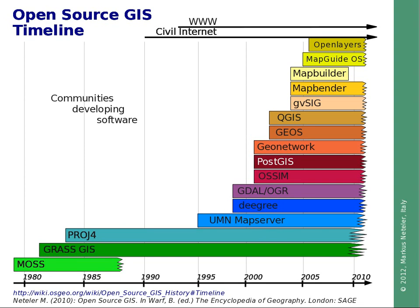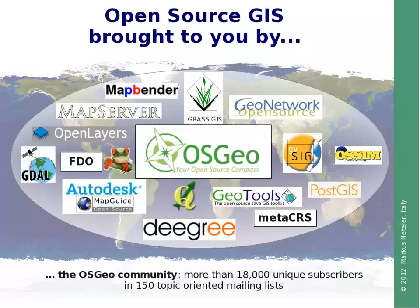Around 2005 and 2006, there was discussion about how to bring everything under a common umbrella, and the idea was to found OSGeo, the Open Source Geospatial Foundation. You can see from the logos that there are well-known projects among them, including industrial players. As of today, there are more than 18,000 unique subscribers in more than 150 topic-oriented mailing lists.